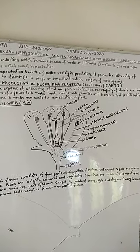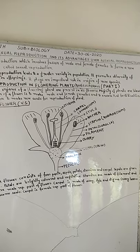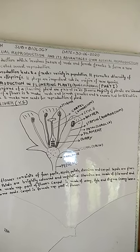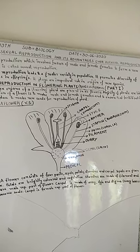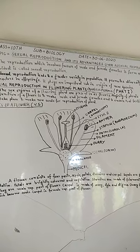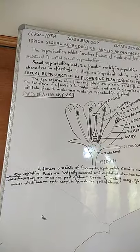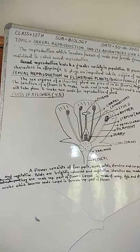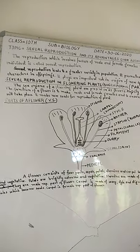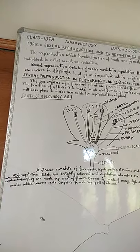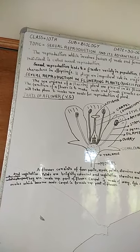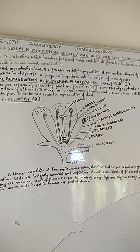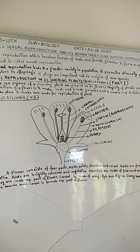Stamens are made of two parts: filament and anther. Anther contains pollen grains. This is the male part of a flower.